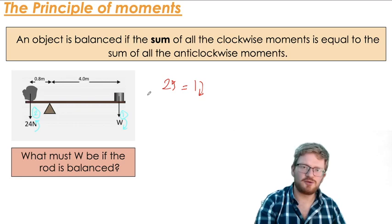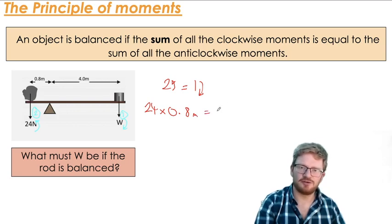So I can say for force two, that is force times distance, so that is going to be the force, which is 24 newtons, multiplied by the distance, which is 0.8 meters. And that is equal to the moment acting in the other direction. So the moment acting in the other direction is a force that is force W multiplied by the distance, which in this case is 4.